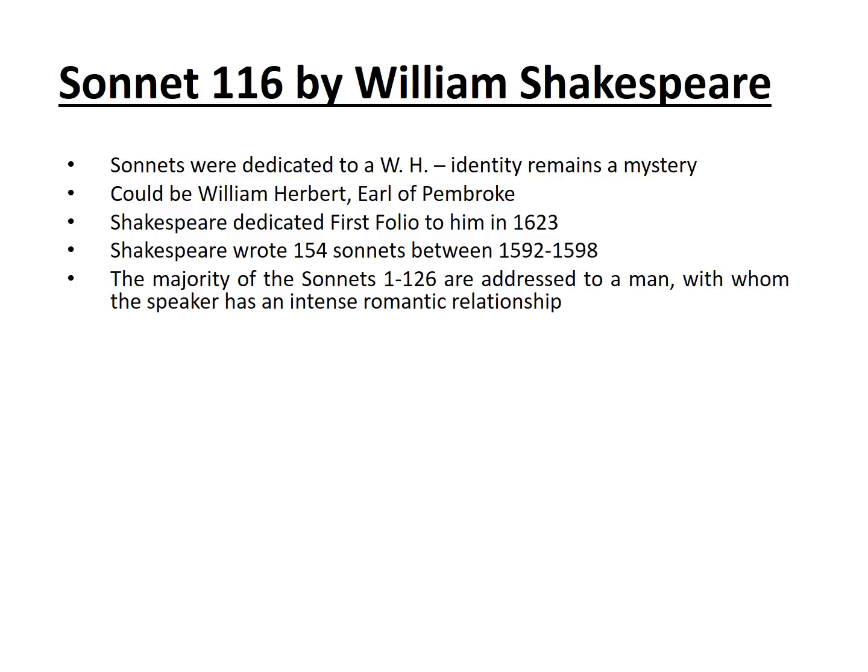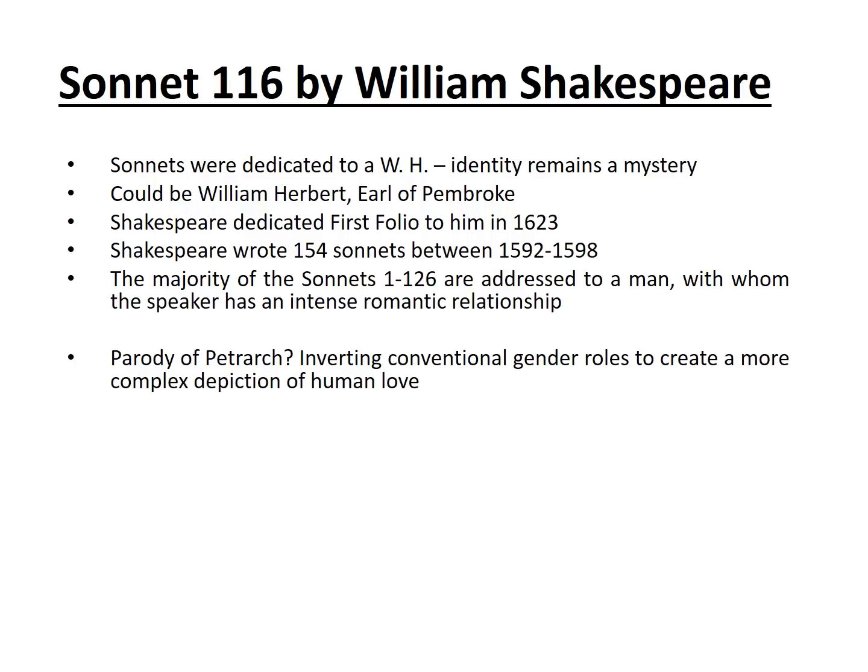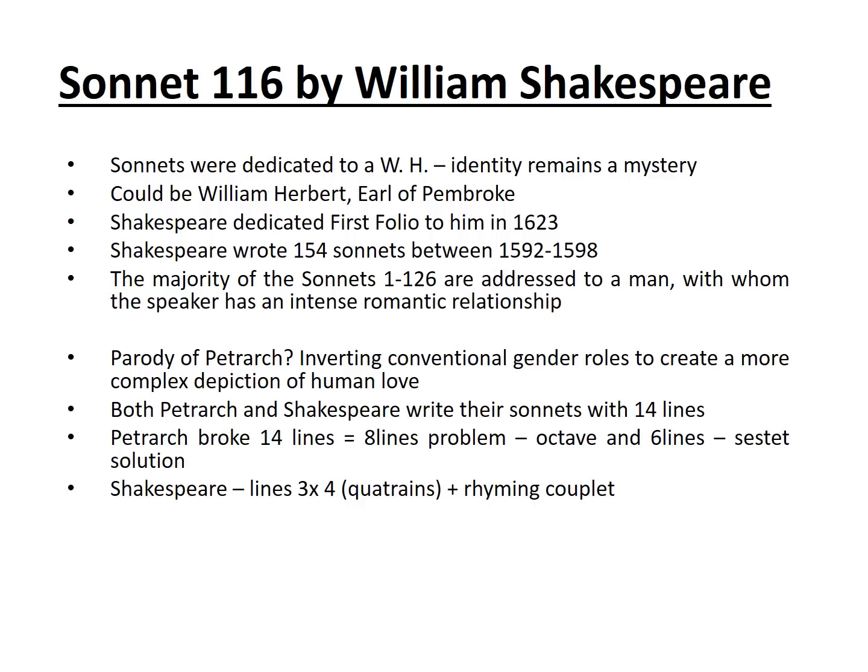The majority of the sonnets he wrote, sonnets 1 to 126, are addressed to a man with whom the speaker has an intense romantic relationship. Additionally, this poem highlights Shakespeare's refinement on the form first created by Petrarch — the sonnet. For many, Shakespeare's take on the sonnet is a parody of Petrarch, inverting conventional gender roles to create a more complex depiction of human love. Both Petrarch and Shakespeare write sonnets with 14 lines. For Petrarch, his sonnet was broken into two clear sections: the octave, the first eight lines, which offered the problem the speaker was trying to solve, and the final six lines, the sestet, which was the potential solution. For Shakespeare, he writes with three quatrains and a closing couplet. Both poems have a point where the subject changes — in Petrarch's sonnets this is usually line nine, called a volta; with Shakespeare it is simply called the turn.